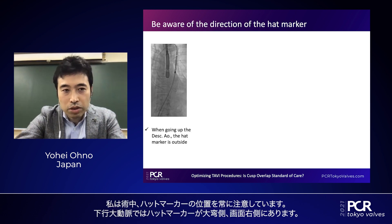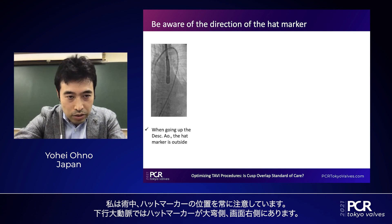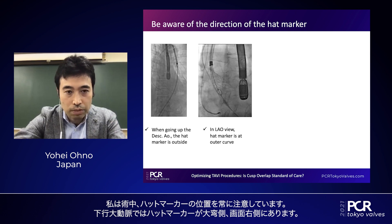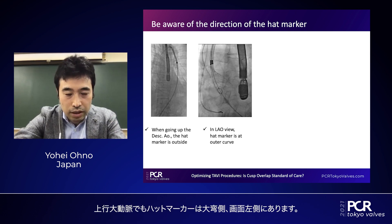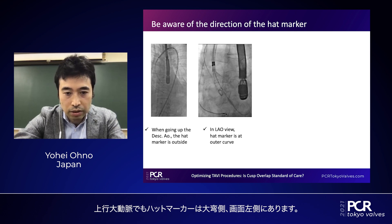During the procedure, I always pay careful attention to the position of the head marker. When we advance through the descending aorta, the head marker is on the right side of the screen — toward the greater curvature. In the ascending aorta at valve implantation, it is always on the left side, which also corresponds to the greater curvature.